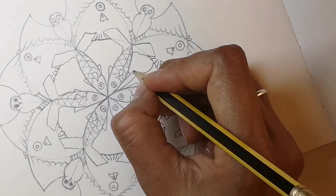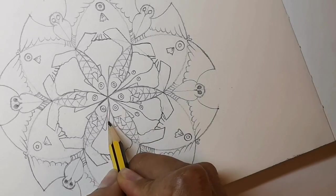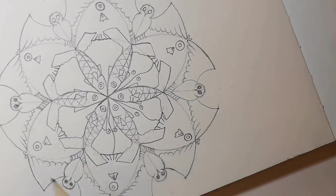Now the flat fish or the skates, sort of hiding underneath the other fish. It's a simple curved line down the middle and eyes either side.